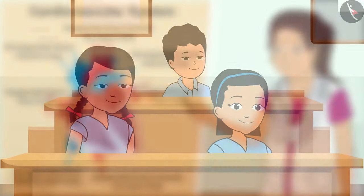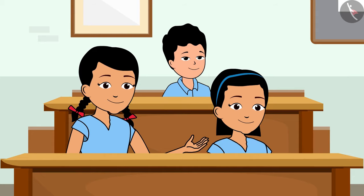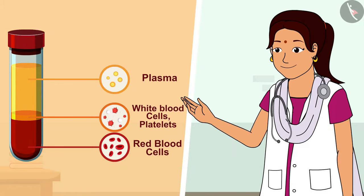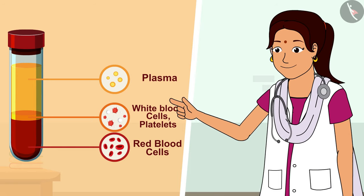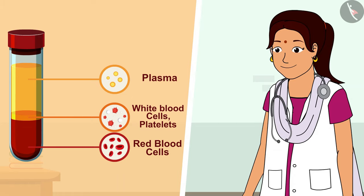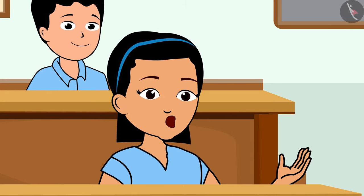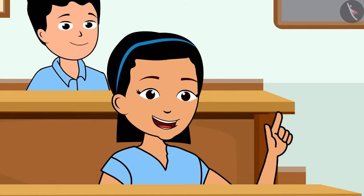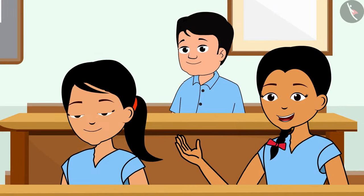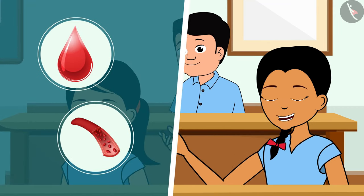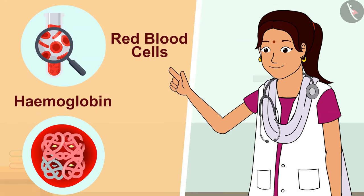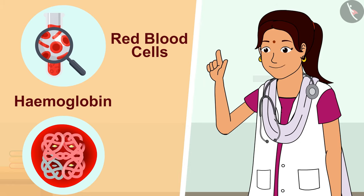Didi, isn't blood a liquid like water? Yes, children, blood is a liquid like water. It has different types of cells suspended in it. The fluid part of blood is called plasma — it constitutes 55% of the blood. Plasma is yellow in color. What about the rest 45% of the blood? If plasma is yellow, then how is our blood red? My older sister is in 11th standard and she told me that blood is constituted of red blood cells. You are right — the blood has cells known as red blood cells. They contain a pigment known as hemoglobin, and it is because of this pigment that our blood is red.